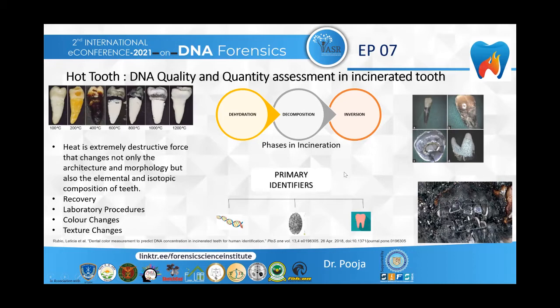Conventional methods of identification such as visual identification have been rendered ineffective in cases where a body is burned beyond recognition. Teeth have a good fortune of surviving really high temperatures. Teeth are excellent sources of genomic and mitochondrial DNA, because of their location and the dental pulp being surrounded by hard tissues, which preserves them from extreme environmental conditions.